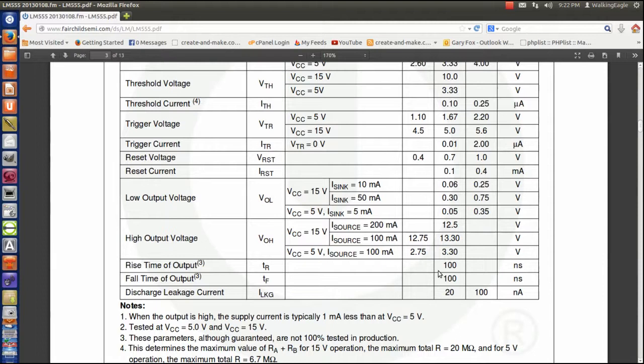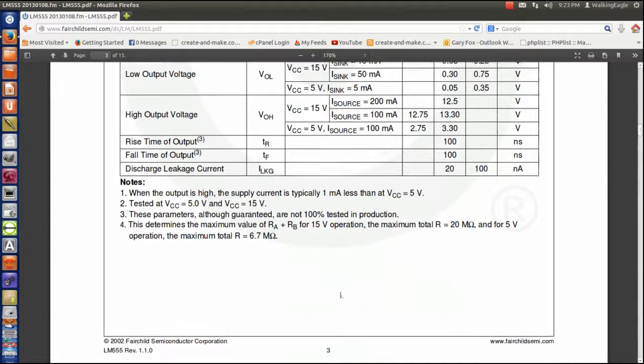The rise time of an output is in nanoseconds - 0.1 microseconds. Same thing with the fall time output. So that is why they drew those curves happening really fast on the square wave on the output. And the discharge leakage current - remember that is the one we worried about, how much it would leak while it is being turned off. And that is going to try to charge that capacitor just a little bit. Not much, but just a little bit. So that is the one that affects the time calculation on the astable.